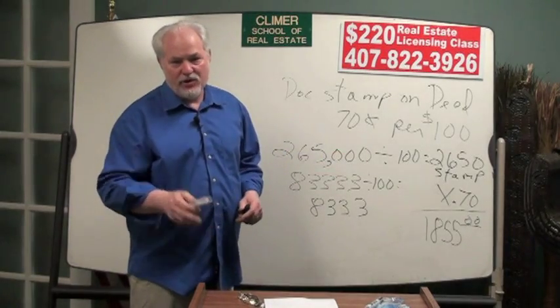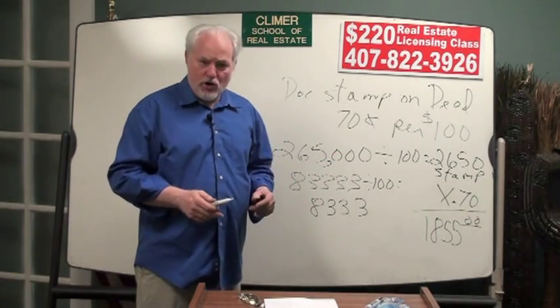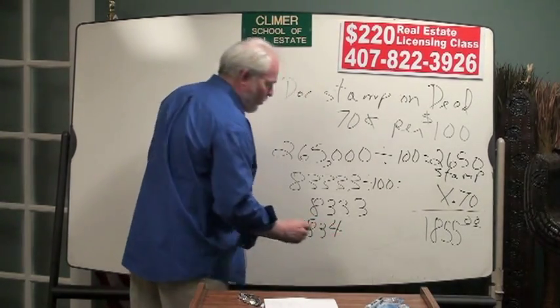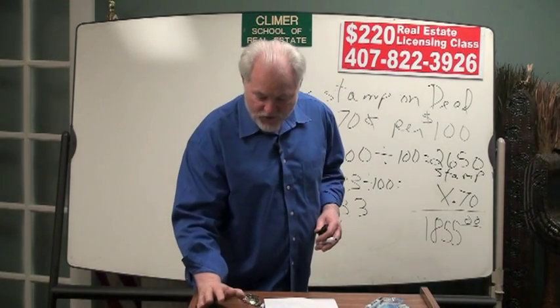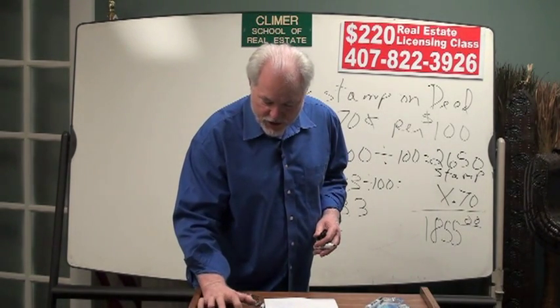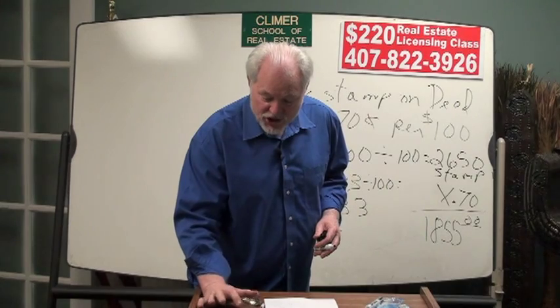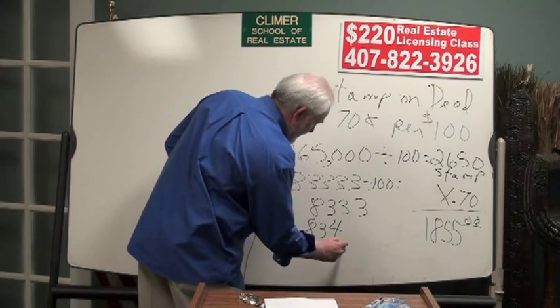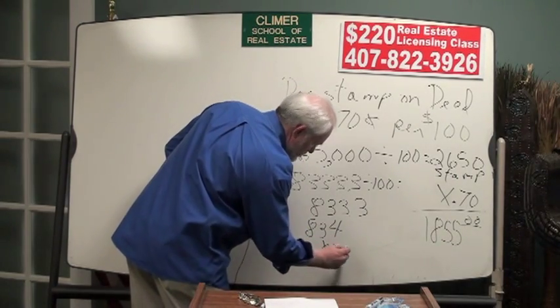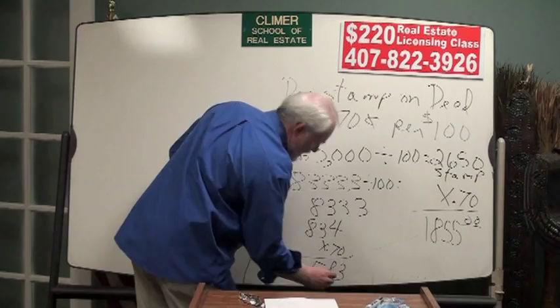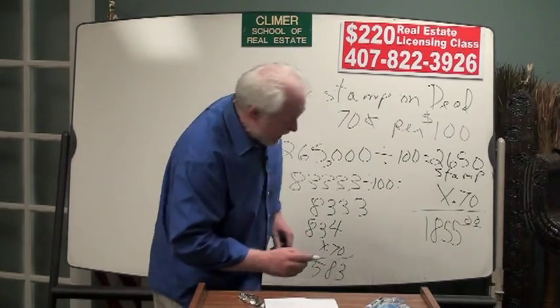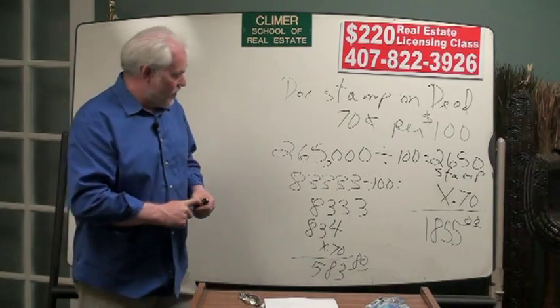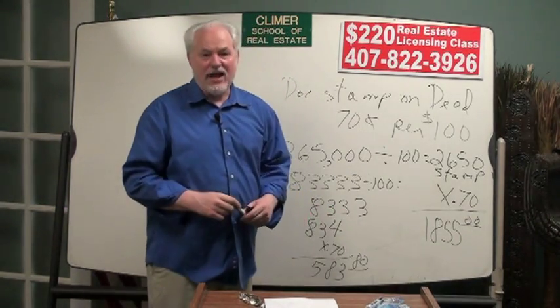Well, you can't buy .3 of a stamp. You either buy a stamp or you don't buy a stamp. So you're going to have to buy 834 stamps. You take the 834 and put it in your calculator times .70, and you'll see that you need $583.80. Doc stamps on the deed always end in zero. If they don't, you probably forgot to round them off.